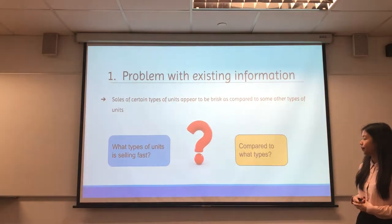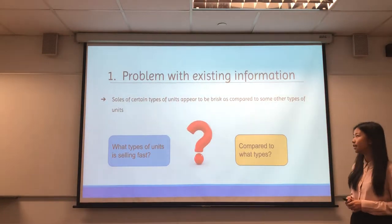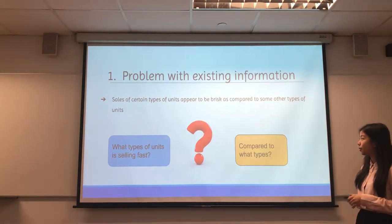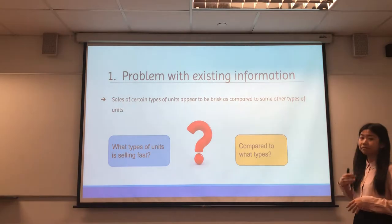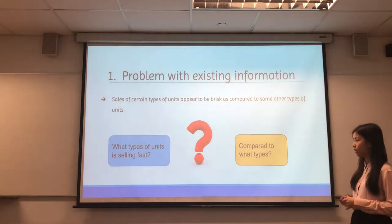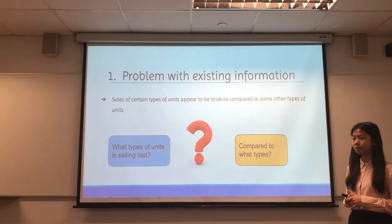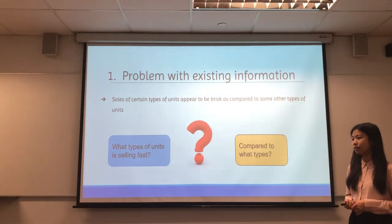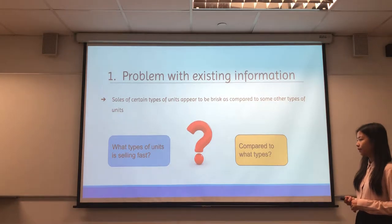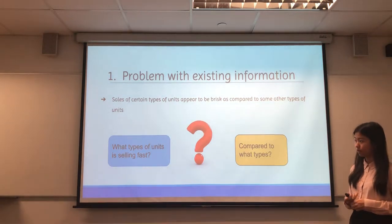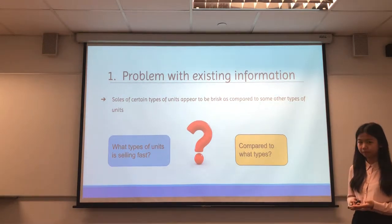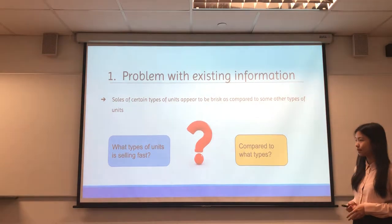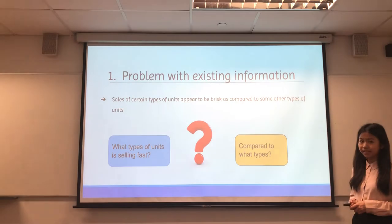First, the information given is that sales of certain types of units appear to be selling fast as compared to some other types of units. The information never specifies what types of units are selling fast — for example, 4-room flats or 5-room flats — as compared to what types of units.